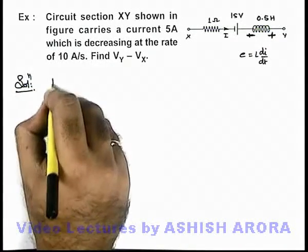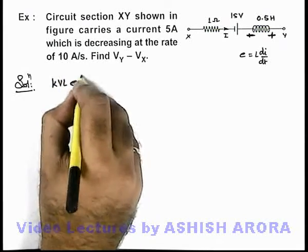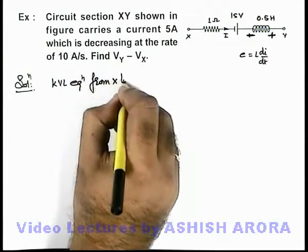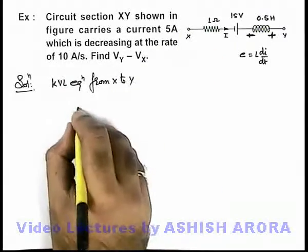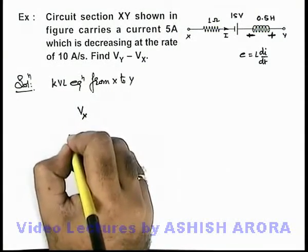If we write KVL equation from x to y, we can consider potential at x to be Vx.